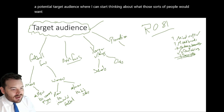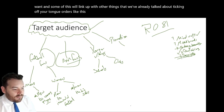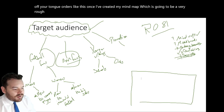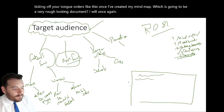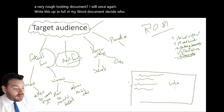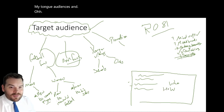Some of this will link up with other things we've already talked about. Ticking off your target audience like this — once I've created my mind map, which is going to be a very rough-looking document — I will once again write this up in full in my Word document, decide who my target audience is, and explain how I'm going to appeal to them.